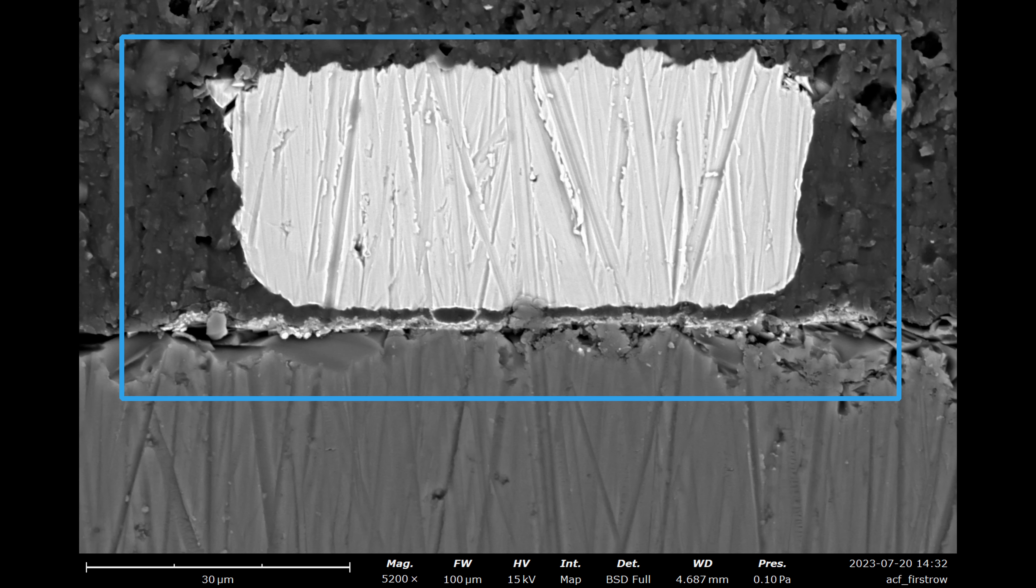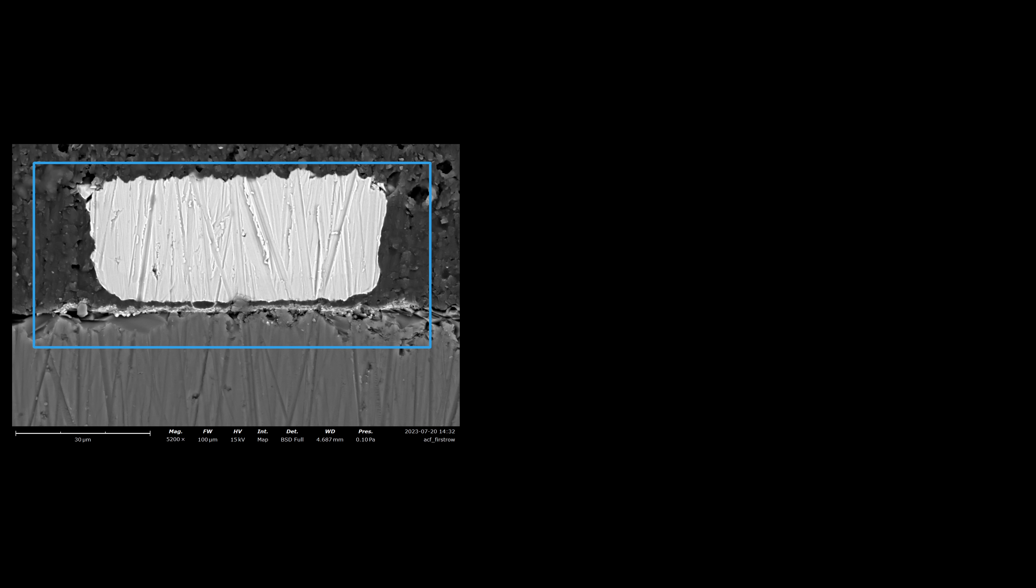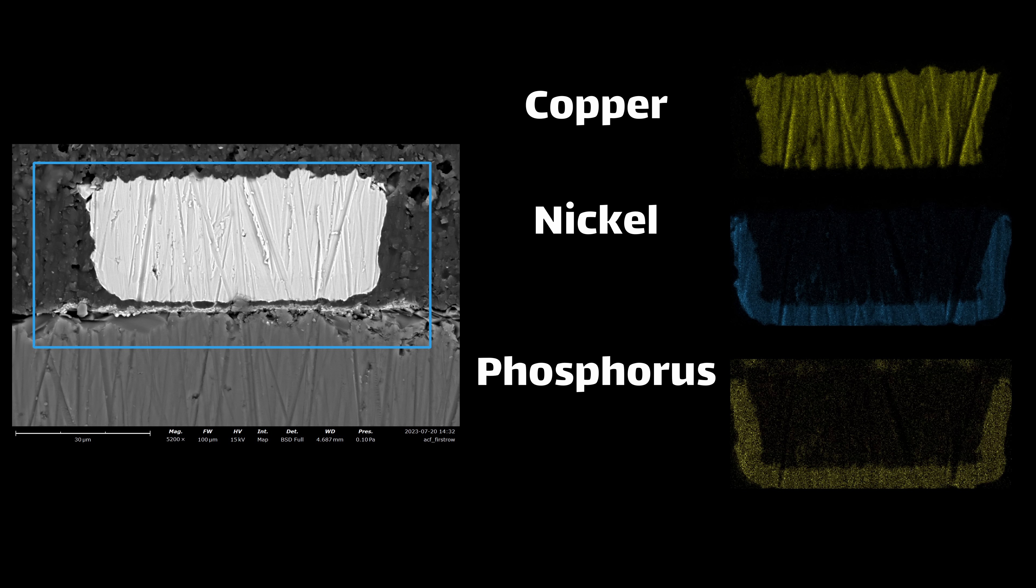If we turn on the element detector on my microscope, we can see a few neat features here. So the copper pad is actually coated in a thin layer of nickel and phosphorus, which I wasn't expecting at all, and it probably means it was coated with an electroless nickel plating solution. I'm not sure why, but I'm thinking it's maybe for corrosion protection.